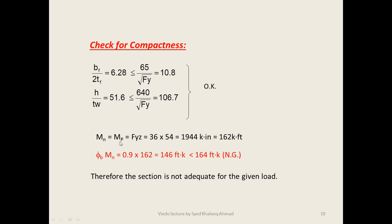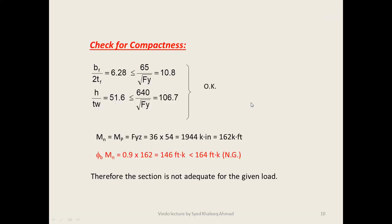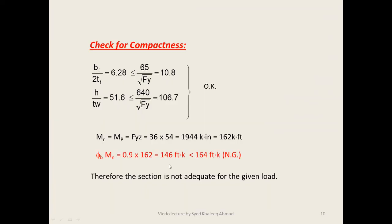Since the section is compact, the full section is capable of yielding, giving maximum plastic moment capacity: Mp equals Fy times Zx equals 36 times 54 equals 1944 kip-in, or 162 kip-ft. The design capacity is phi_b times Mn equals 0.9 × 162 equals 146 kip-ft. However, the required design moment Mu is 164 kip-ft, which exceeds the capacity of 146 kip-ft. Therefore, the W16×31 section is not adequate for the given load.